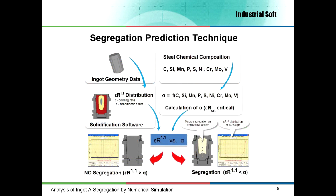This flowchart presents the macro-segregation prediction technique we have developed and implemented in the segregation prediction module of the software. This technique is based on the Suzuki and Miyamoto method, the most used way to predict A-segregation in steel ingots. As you can see in this flowchart, there are two branches. The left one calculates by simulation the cooling and solidification rate, with input data being the ingot geometry, material properties and initial pouring and mold temperature. The other branch calculates, using the chemical composition of the steel, the critical value alpha — the value at which the A-segregation will appear. The software then compares the values from both branches and plots the segregation area in regions that contain values below the critical value.